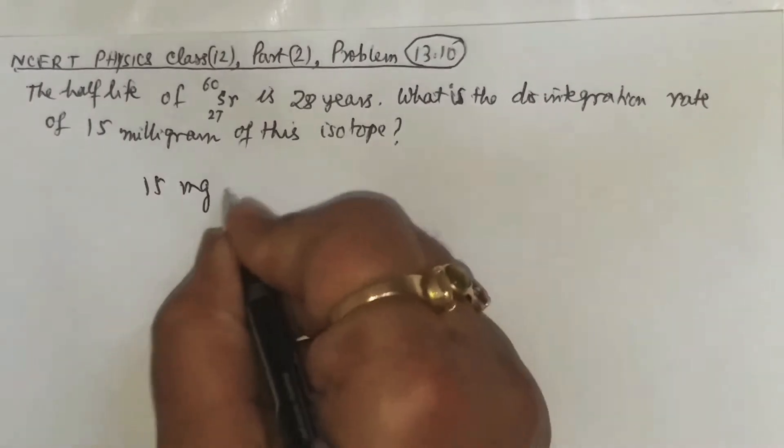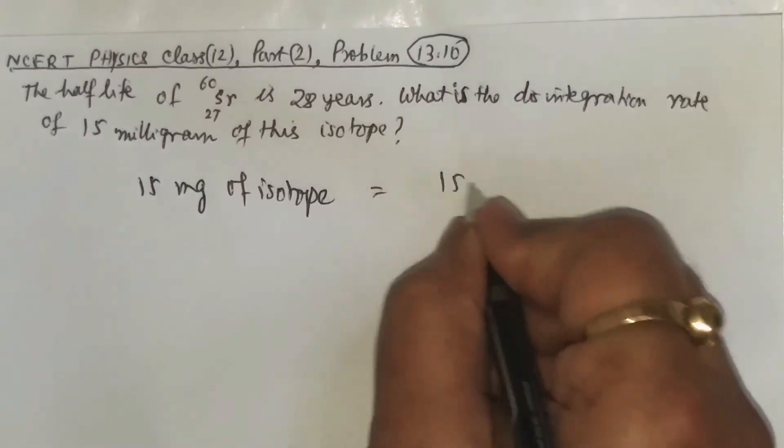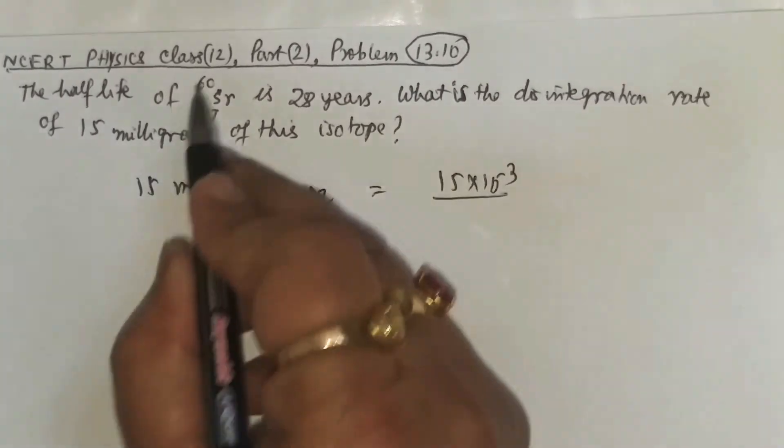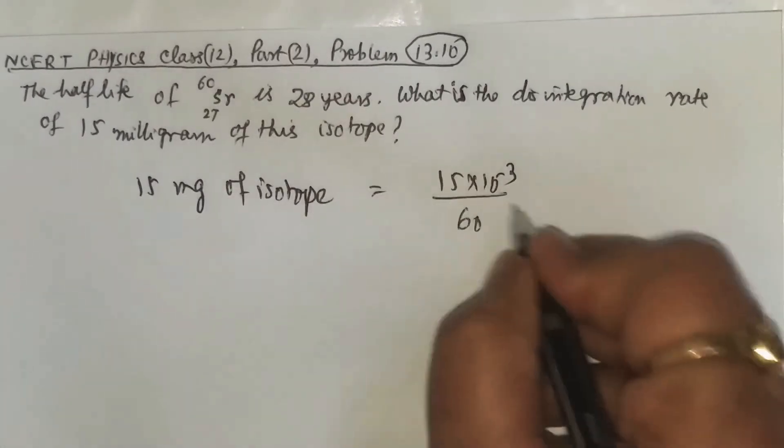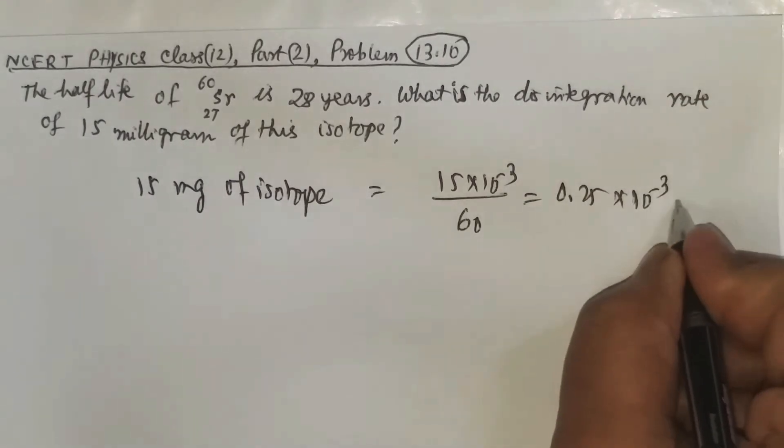So now 15 milligrams of the isotope, how many moles? 15 into 10 to the power minus 3 divided by 60. So we have 0.25 into 10 to the power minus 3 moles.